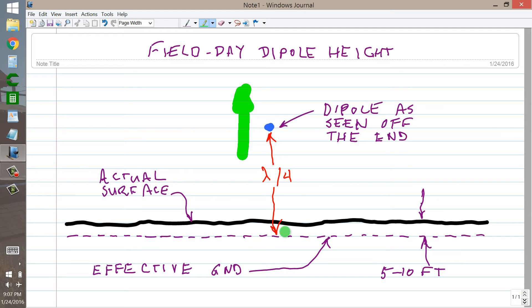it travels a quarter of a wavelength through space and is shifted by 90 degrees. It reflects from that effective ground and reverses in phase, so now you've got 270 degree phase shift.